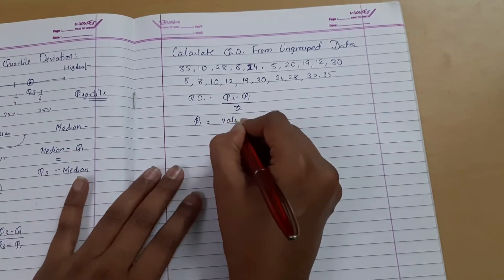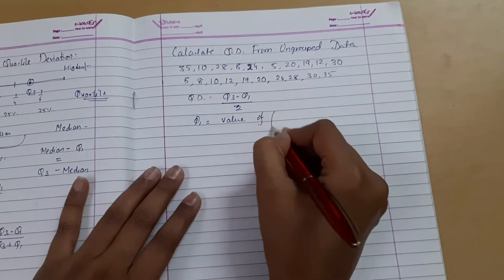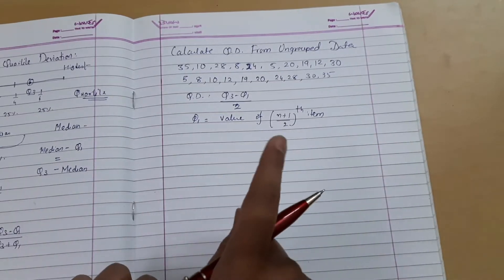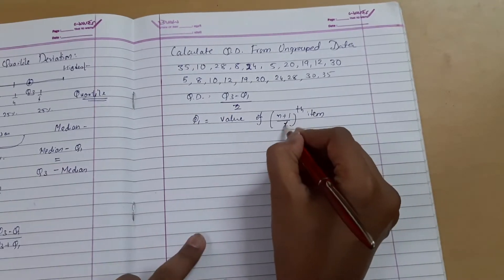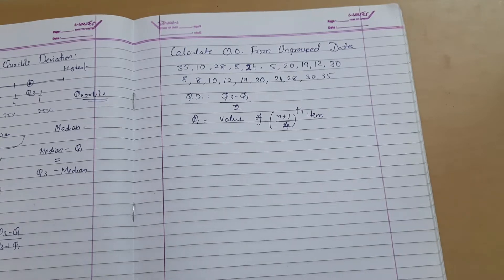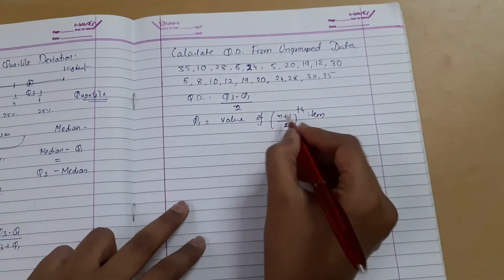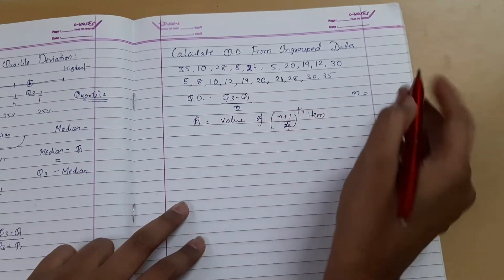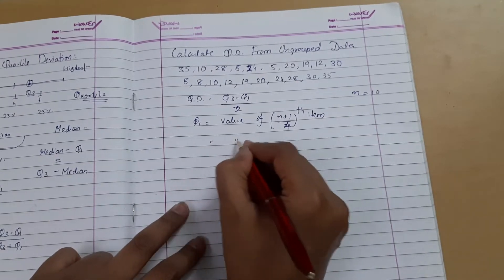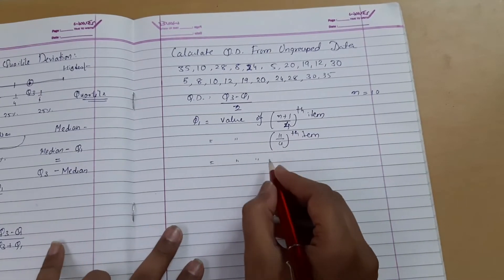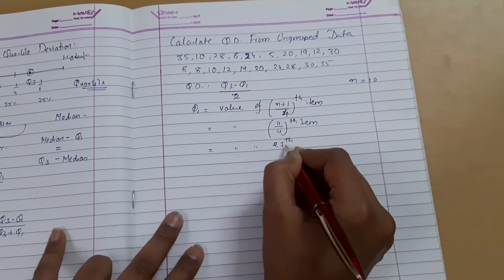The position for Q1 is given by the value of (n+1)/4th item. Number of observations plus 1, divided by 4. That's the first one-fourth part position. To find Q1, the first quartile, n is the number of observations: 1, 2, 3, 4, 5, 6, 7, 8, 9, and 10. We have n equals 10.